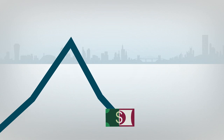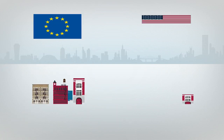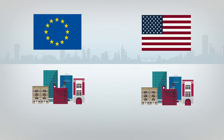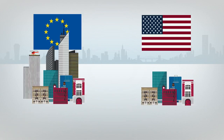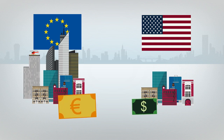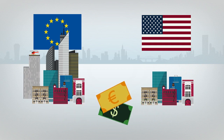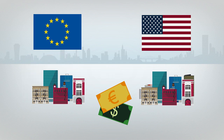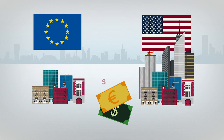For example, suppose an investor thinks Europe's economy is going to grow faster than the United States, and as a result, she thinks the Euro will strengthen against the US dollar. She can buy the Euro versus US dollar pair to speculate on her assumption. If the price of the currency pair rises, she'll make money. Conversely, if the price falls, she'll experience a loss.